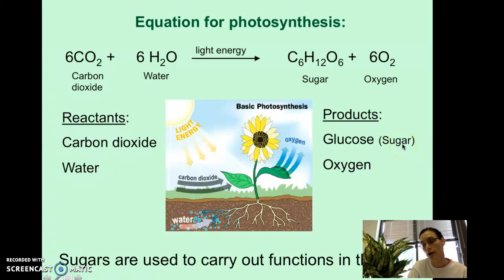So glucose and sugar are used synonymously. So those mean the same things. Also, sometimes carbohydrates is used here too. So you want to know that all of those are synonyms. Glucose, sugar, carbohydrates. And then the very last line that you're going to write in, and some of it is behind my picture here, so you're going to need to listen. Sugars are used to carry out functions in the cells. Sugars are used to carry out functions in the cells of this plant. So the plant needs those sugars that are produced to then live.